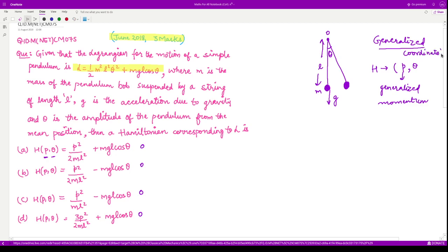So we only have one generalized coordinate here. And the l, the corresponding Lagrangian, is given to be half m square l square theta dot square plus m g l cos of theta.